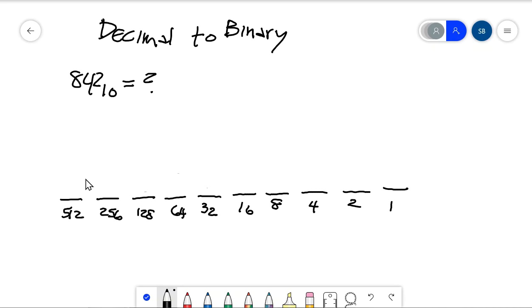So one thing I could run into, if I don't have enough positions here, I might have to put the next higher position. So you always have to make sure you have a number here that's higher than the number that you have. So 1024 is higher than 842, so I'm good.